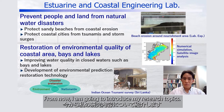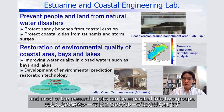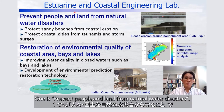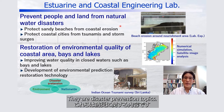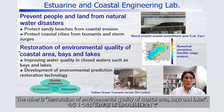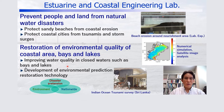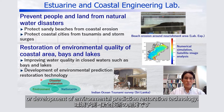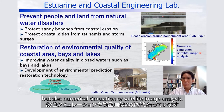I will introduce my research topics. I belong to the coastal engineering laboratory, and my research topics can be divided into two groups: one is protecting people and land from natural disasters — including sediment transport, near-shore waves, near-shore currents, and disaster prevention; the other is the restoration of environmental quality in coastal areas, bays, and lakes, including improving water quality and developing environmental protection and restoration technologies. We conduct laboratory experiments, field surveys, numerical simulations, and satellite image analysis.